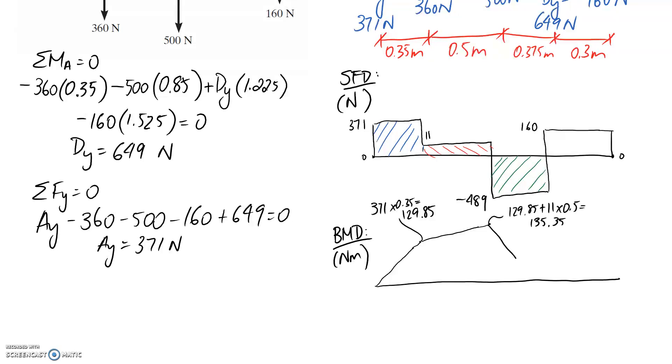It's actually going to cross over the axis, and you can find out how low it gets. It's what you started with, which was 135.35, and we need to take away the area in here, which is 489 times the width of 0.375. You end up going all the way down to negative 48.03.